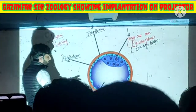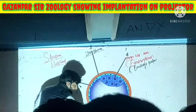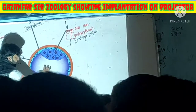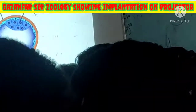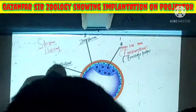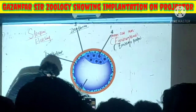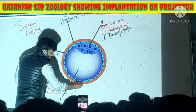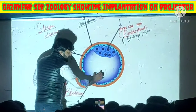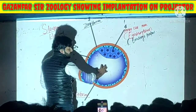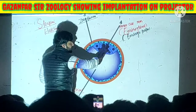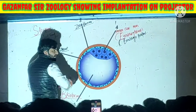In summary, when we have the zona pellucida intact, along with the trophoblast and a cavity — that cavity is called the blastocoele — together with the inner cell mass, this entire structure is called the blastocyst.